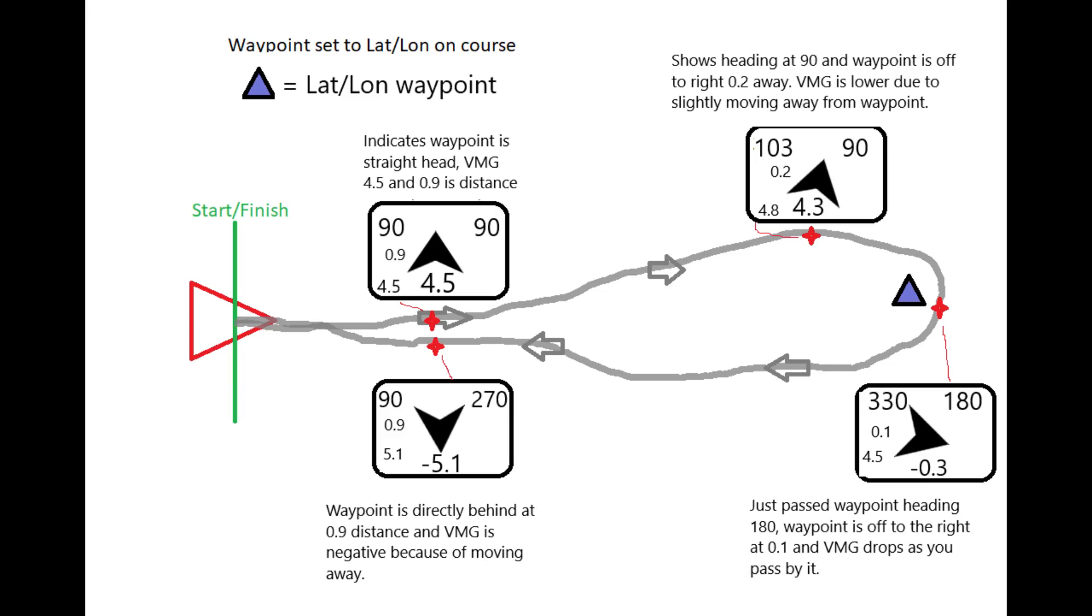And you can see your VMG drop as you turn the corner and move away from it again until the waypoint is behind you. But as long as you can keep that VMG as high a magnitude as possible, you're on the fastest route both to the waypoint and then away.